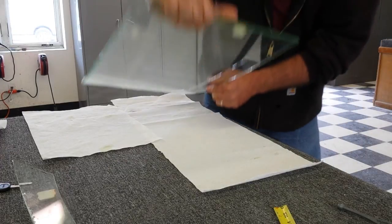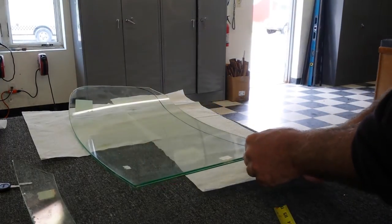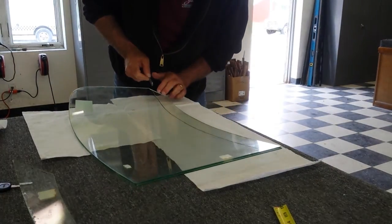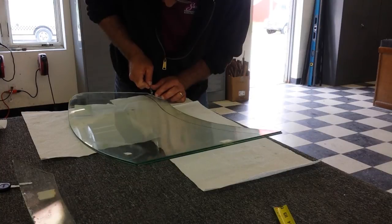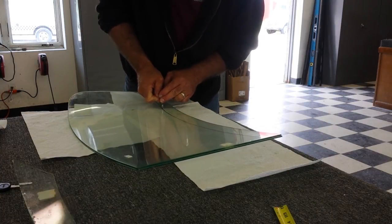We're going to flip her over. I like to leave my black line on there so that I can tell where my first cut is. We're going to start right in the same spot going the other direction. Again, don't lift your cutter. Nice and slow.